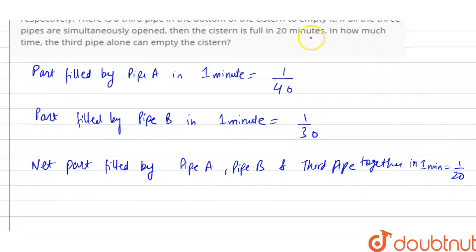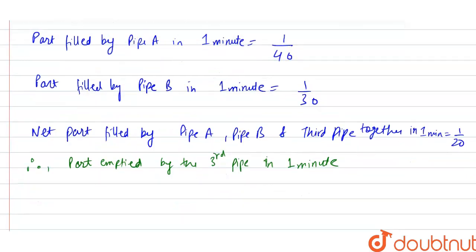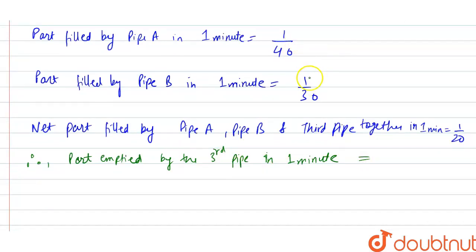Now we have to find in how much time the third pipe alone can empty the system. So now, therefore, part emptied by the third pipe in 1 minute. So now, this is the net part filled by A, B, and third pipe is 1 by 20, and part filled by pipe A is 1 by 40 and pipe B is 1 by 30. So now, net part emptied will be equal to sum of this minus this.